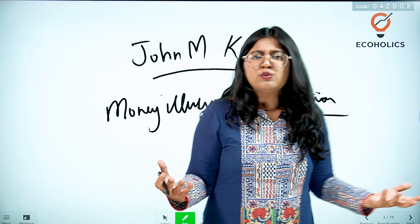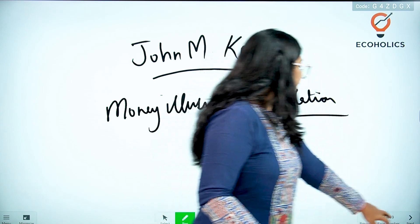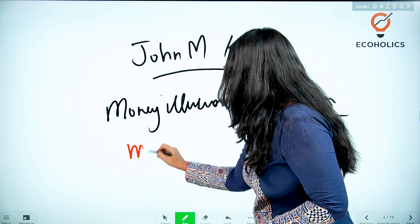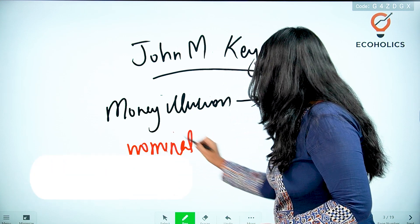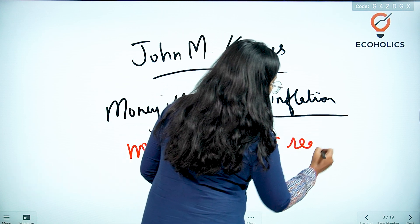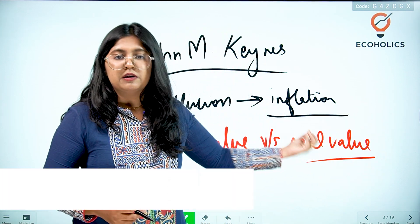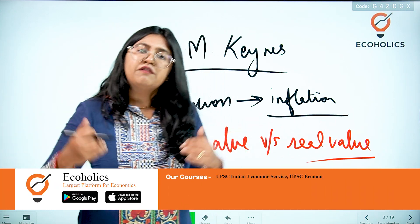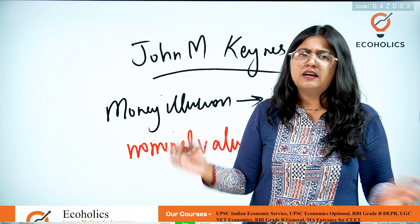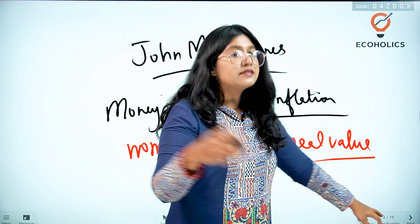So in money illusion, people are getting confused by thinking that they are getting richer but actually they are not. What actually happens is people confuse the nominal value of money with the real value of money. The real value of money obviously will account for the inflation portion, but people do not think about the real value. From the nominal value, from the outward impact, from the increase in salary, they think they are getting richer because they are getting an increment or a bonus. But actually it's the reverse, or it is not that condition.